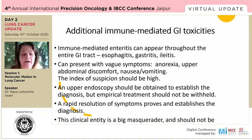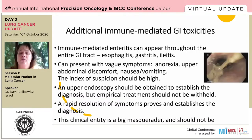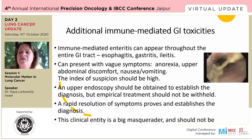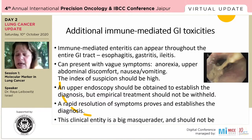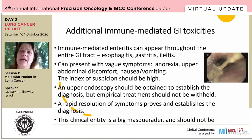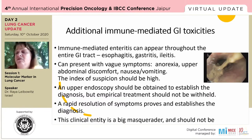There are other immune-mediated GI toxicities — enteritis, esophagitis, gastritis, ileitis — the whole enteral tract can be involved, presenting with vague symptoms of anorexia, upper abdominal discomfort, nausea, and vomiting. I call this entity a big masquerader. I had a patient presenting with anorexia and food aversion. His upper endoscopy showed significant inflammation in the esophagus — not candida or viral — just immune-mediated esophagitis. We should start empirical treatment based on clinics, not waiting for endoscopy, and rapid symptom resolution will establish the diagnosis. He responded to steroids and IO treatment was resumed.